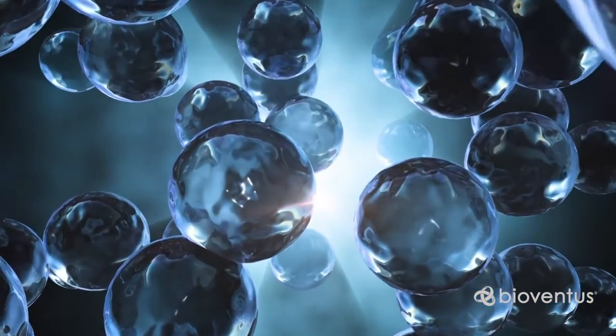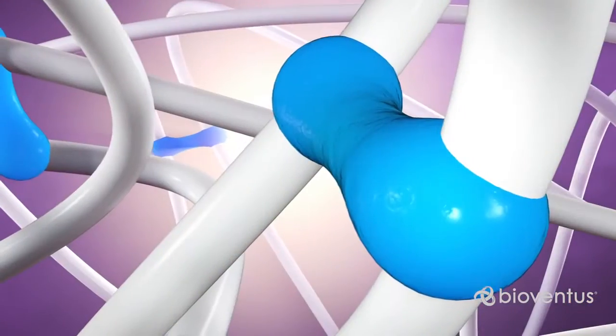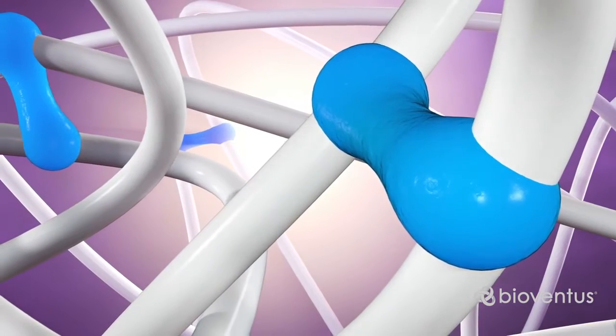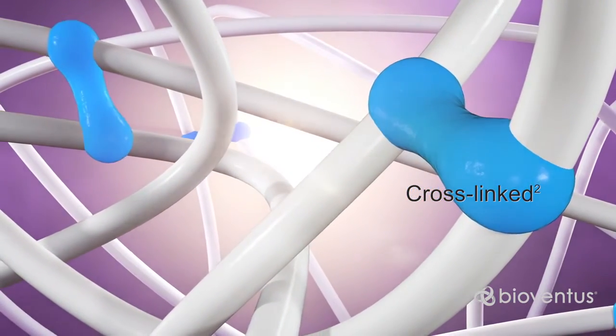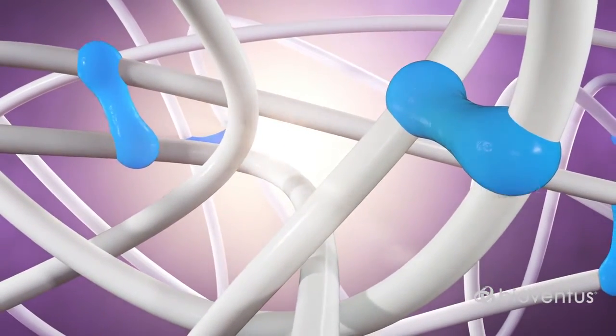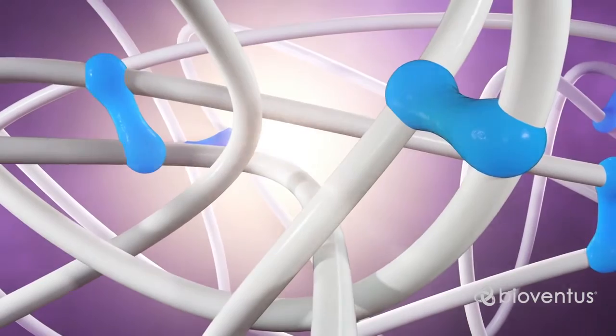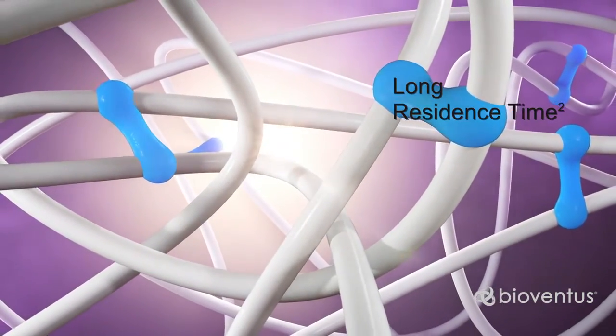This increases the theoretical molecular weight by around 10,000 billion. The NASHA stabilization process consists in the formation of 1% covalent bonds between hyaluronic acid chains. This minimal amount of cross-linking retains the physiological properties of the hyaluronic acid while prolonging duralane residence time in the treated joint.